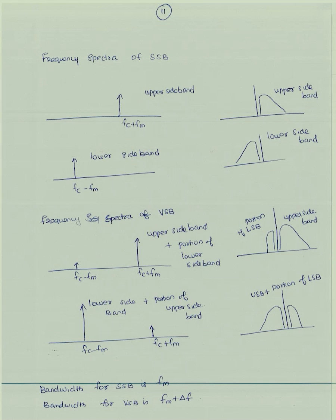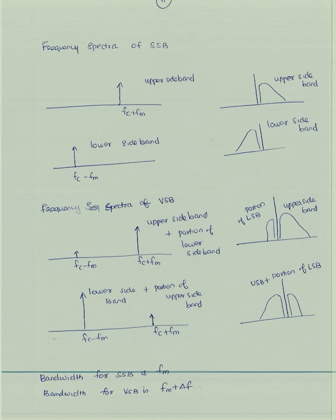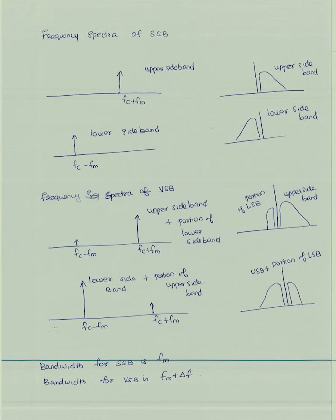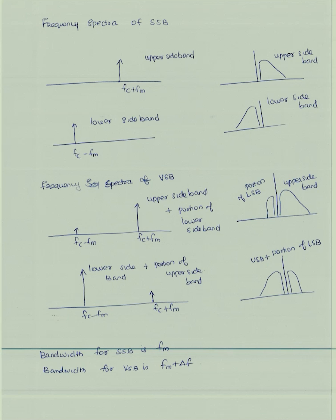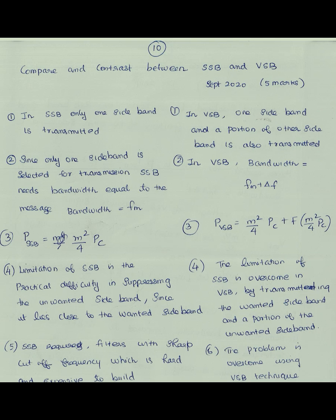The frequency spectrum of SSB: the upper sideband is at fc + fm and the lower sideband is at fc − fm. For VSB, the frequency spectrum shows the upper sideband at fc + fm and the lower sideband at fc − fm, with the USB for VSB being fm + ΔF (including a vestige of the other sideband).